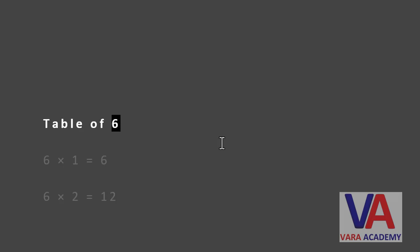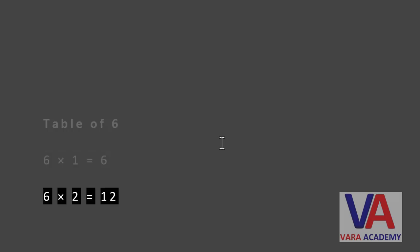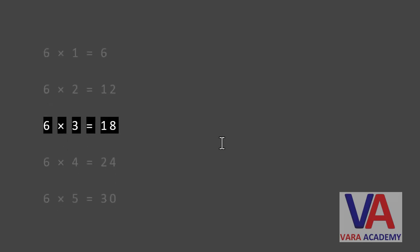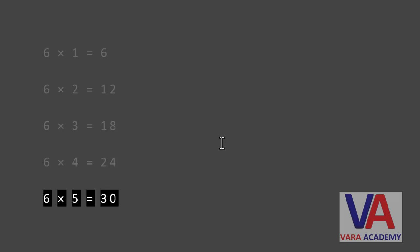Table of six. Six times one equals six. Six times two equals twelve. Six times three equals eighteen. Six times four equals twenty four. Six times five equals thirty.